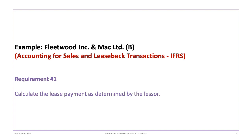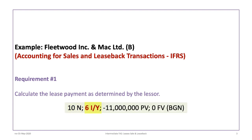The first requirement is to calculate the lease payment as determined by the lessor. Using your financial calculator, enter the following variables: 10 N, 6 I/Y, $11,000,000 plus/minus PV, 0 FV, and make sure your calculator is in Begin or BGN mode. Computing PMT will result in a lease payment of $1,409,950.